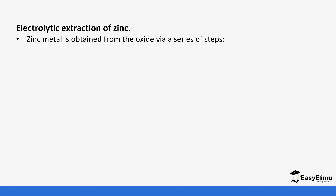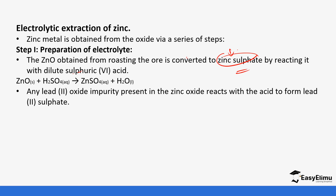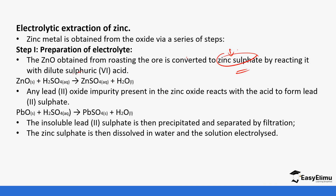For electrolysis, zinc is obtained from the oxide via a series of steps. First, preparation of the electrolyte: the ore is roasted and converted to zinc sulfate, which is the electrolyte used. This is done by reacting with dilute sulfuric acid. Any lead oxide present forms a white precipitate, since lead sulfate is insoluble. The zinc sulfate is dissolved in water and the solution is electrolyzed.